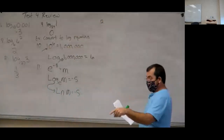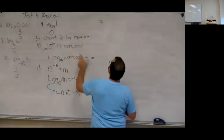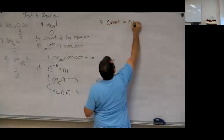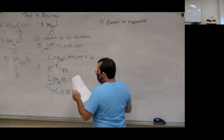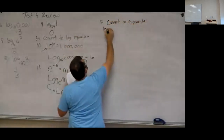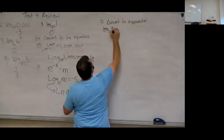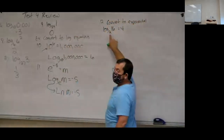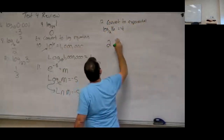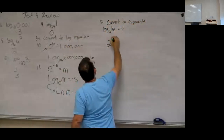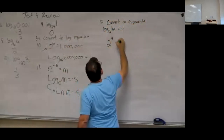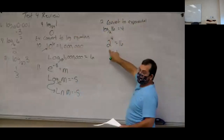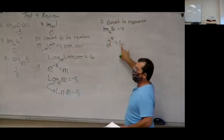Going the other way, we convert from logarithmic to exponential. Log base 2 of 16 equals 4. Take the base, which is 2, raise it to the exponent, which is 4, and 2 to the 4th equals the result, which is 16. When you're done, this should be a true statement: 2 times 2 times 2 times 2 is 16.